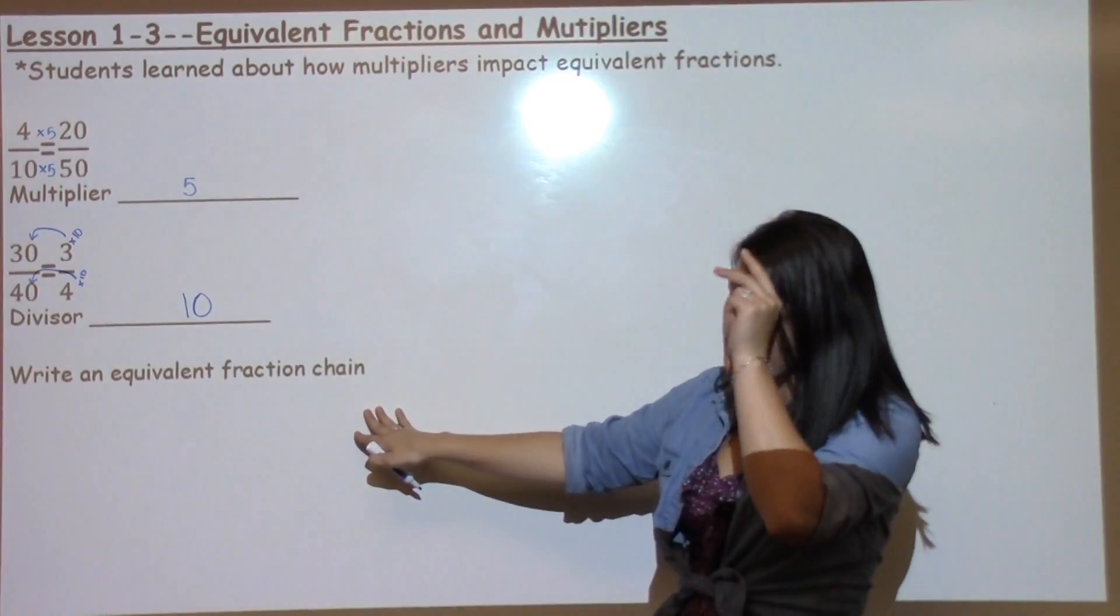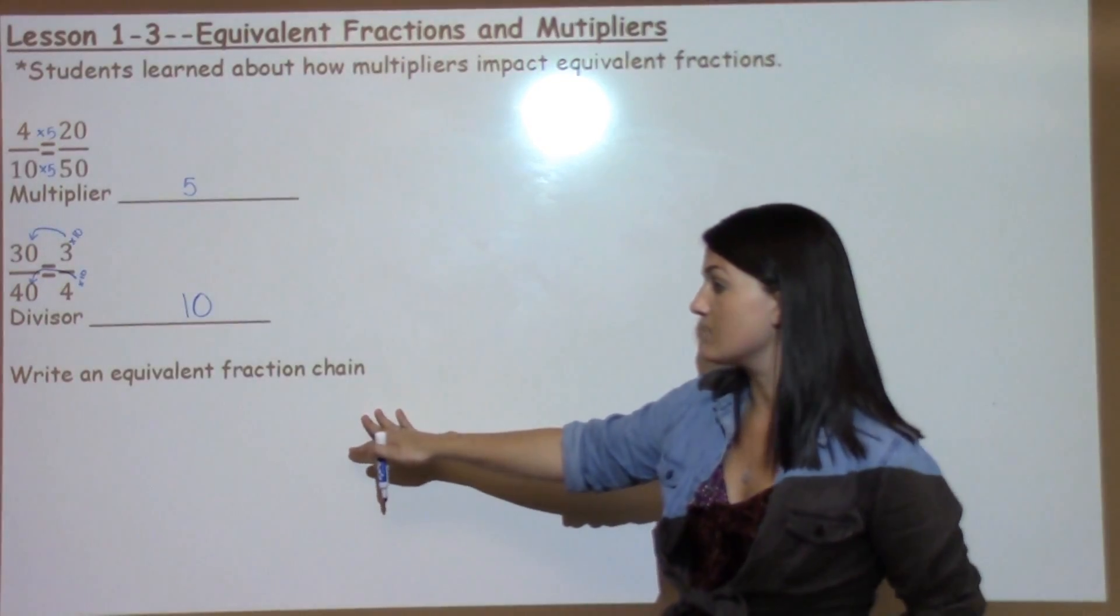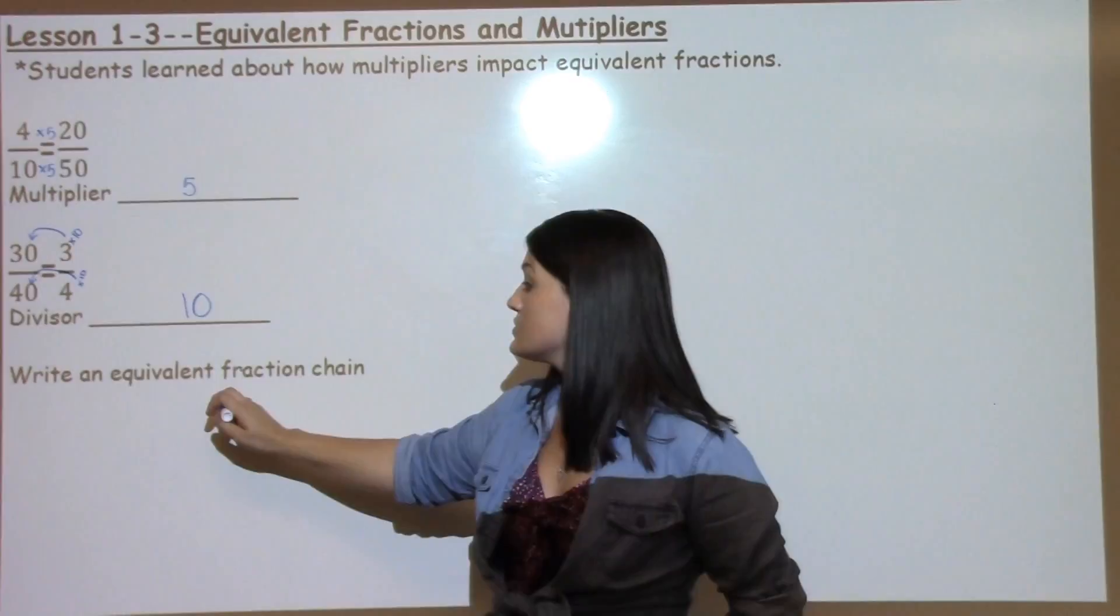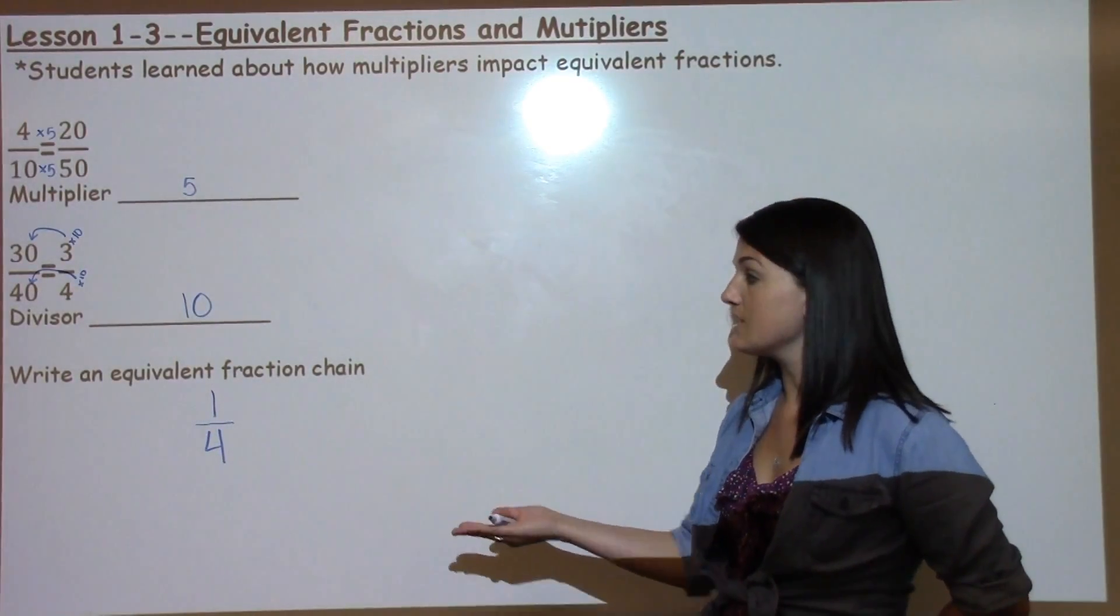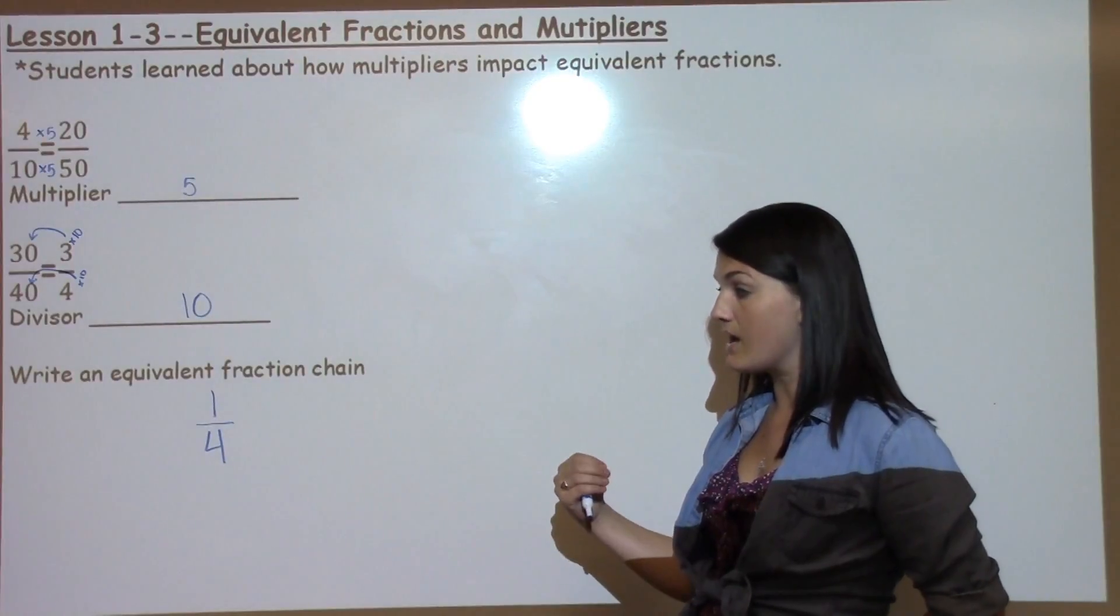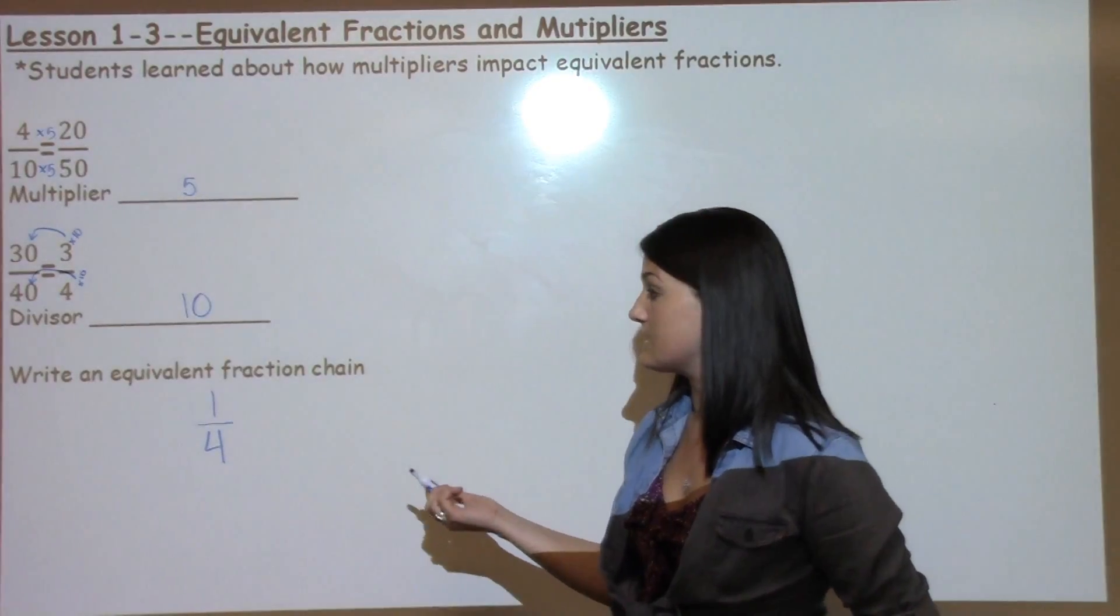Another strategy that we built upon from yesterday's lesson was working with equivalent fraction chains. Students were able to take a unit fraction and build an equivalent fraction chain by multiplying the top and the bottom by the same number.